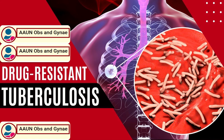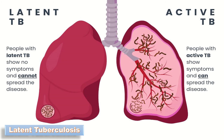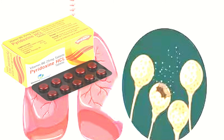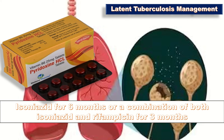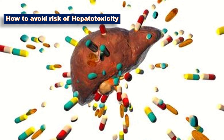In latent tuberculosis, delaying treatment to the second trimester is not recommended. Commencing treatment in the first trimester has been shown to reduce the risk of maternal complications and almost prevent miscarriage, preterm labor, and perinatal mortality and morbidity. The treatment for latent tuberculosis infection is isoniazid for six months, or a combination of isoniazid and rifampicin for three months. Supplemental pyridoxine should be given when treatment with isoniazid is initiated.